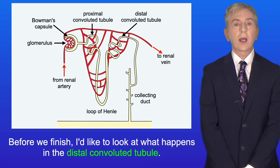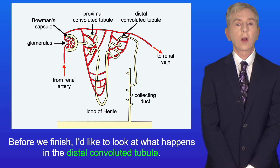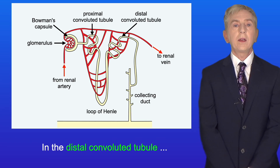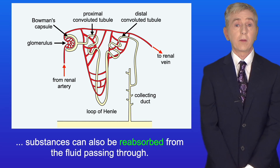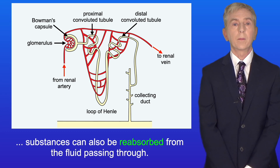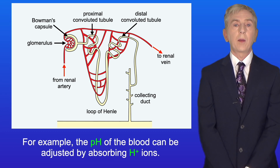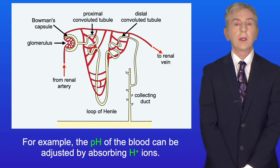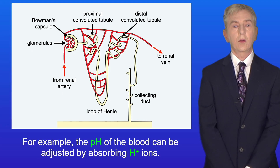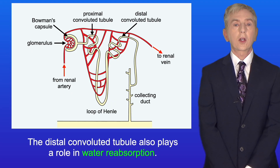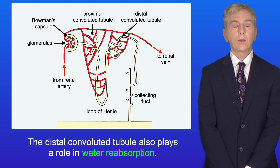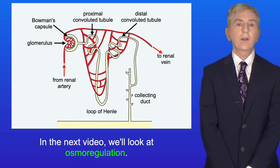Now, before we finish, I'd like to look at what happens in the distal convoluted tubule. Substances can also be reabsorbed from the fluid passing through. For example, the pH of the blood can be adjusted by absorbing hydrogen ions. Other ions, such as potassium, can also be reabsorbed. And the distal convoluted tubule also plays a role in water reabsorption. In the next video, we look at osmoregulation.